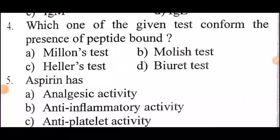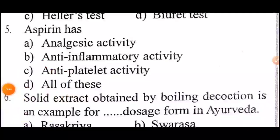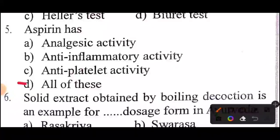Next question: Which one of the given tests confirms the presence of a peptide bond? Answer: Option D — Biuret test.